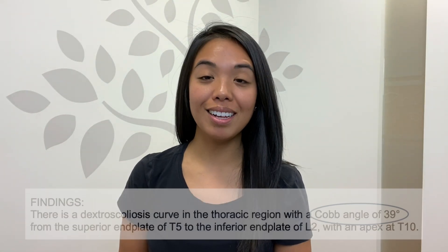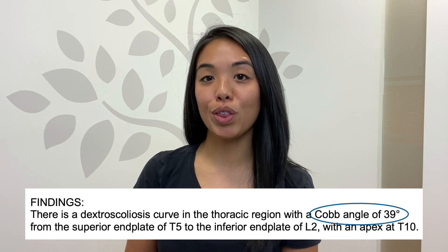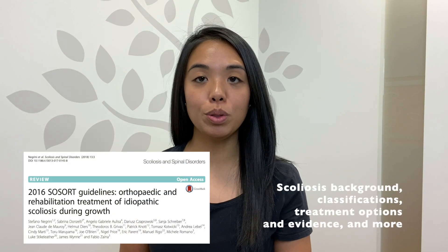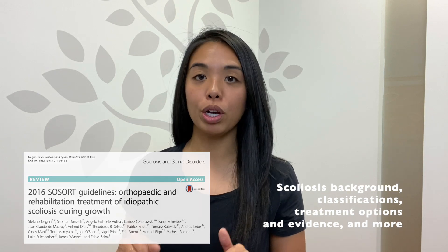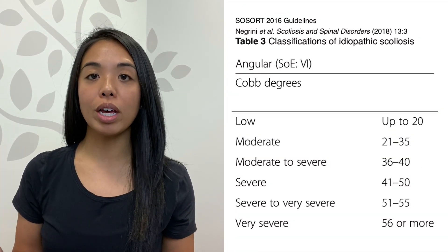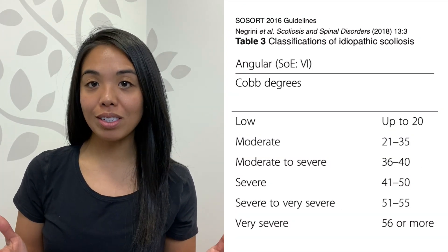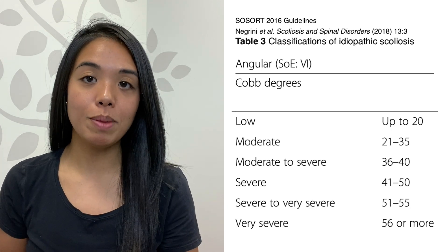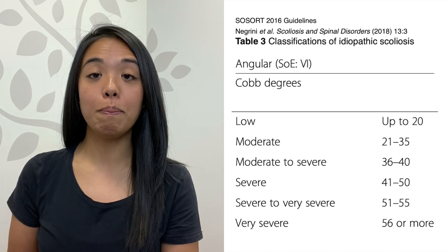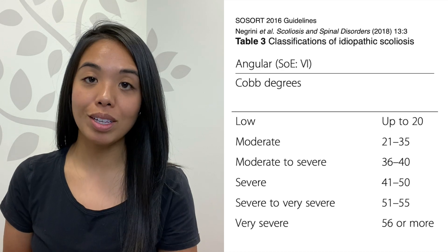In this case the Cobb angle is 39 degrees. Here's a chart from the SOSORT 2016 guidelines, linked in the description below, which shows how the medical community generally categorizes curves based on size. As you can see from this table, the bigger the Cobb angle, the greater the size of the curve.